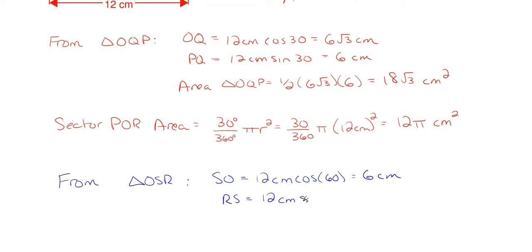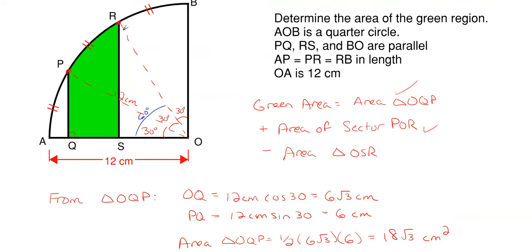And then my height which is RS would be 12 centimeters sine of 60 degrees which gives me 6 square roots of 3 centimeters. So basically since we have certain distances here and we have equal arc lengths here of 30 degrees, basically QO is now RS and PQ is now SO they've flipped.